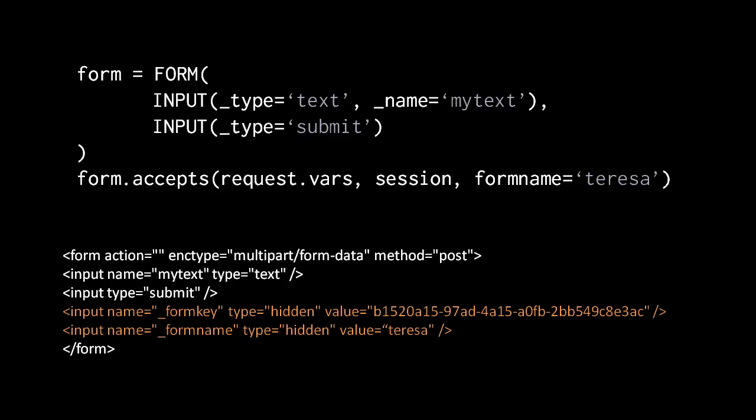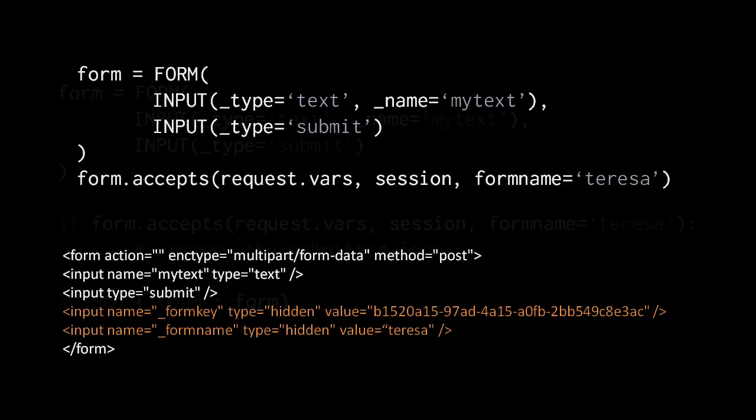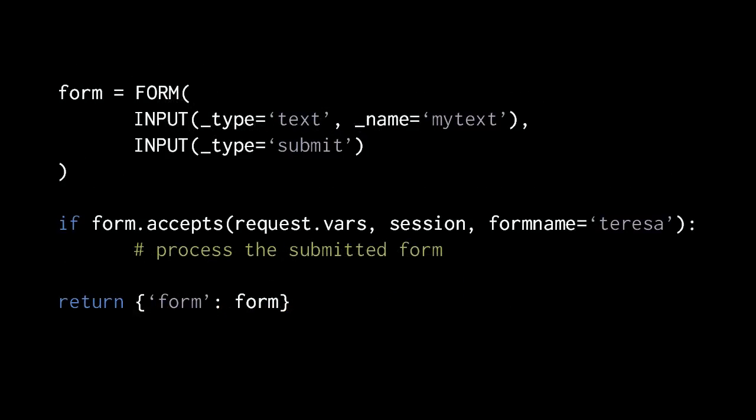If the accepts method determines that form data is being submitted and this is not a double submission — which it determines by checking the form key value in the session — then the accepts method returns true; otherwise it returns false. A very common idiom in Web2Py is: in the action, create the form using the form helper, call accepts passing the request vars, session, and optionally a name, and if accepts returns true, process the submitted form data.